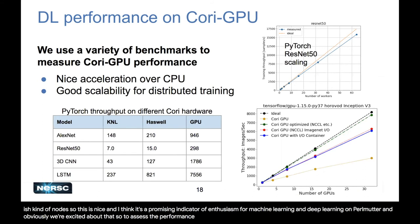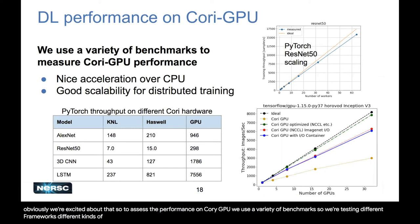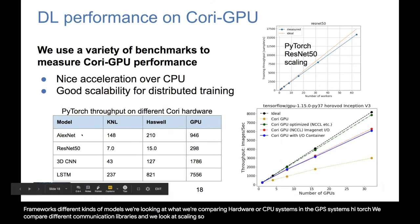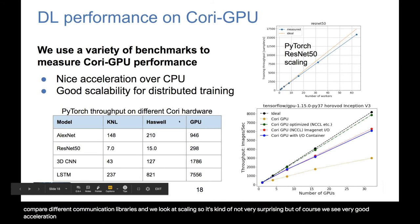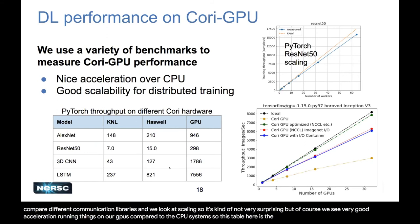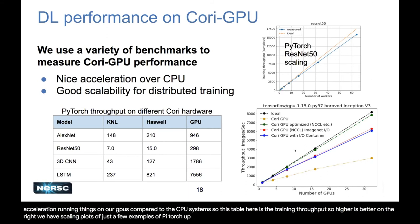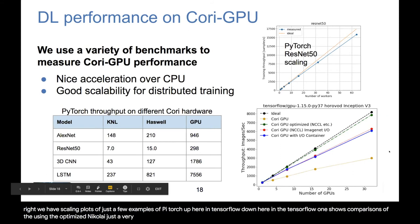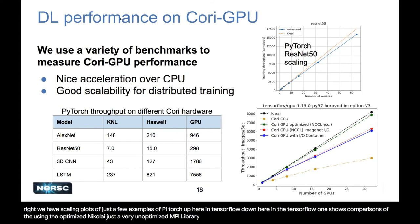To assess performance on Cori GPU, we use a variety of benchmarks testing different frameworks, different kinds of models, comparing CPU and GPU systems, different communication libraries, and looking at scaling. We see very good acceleration running on GPUs compared to CPU systems. Scaling plots for PyTorch and TensorFlow show comparisons of using the optimized NCCL libraries from NVIDIA versus unoptimized MPI. In summary, the system is performing well and we'll keep working on it.